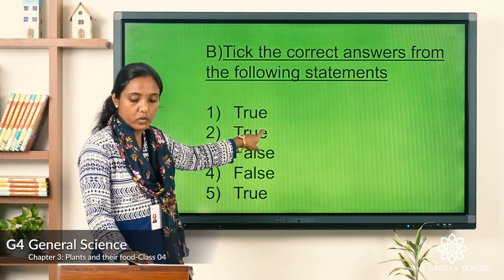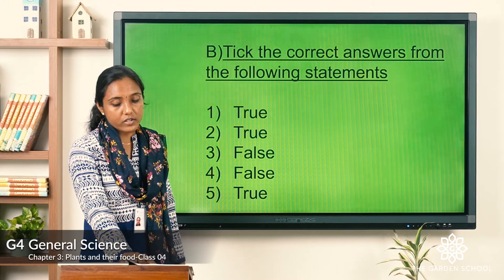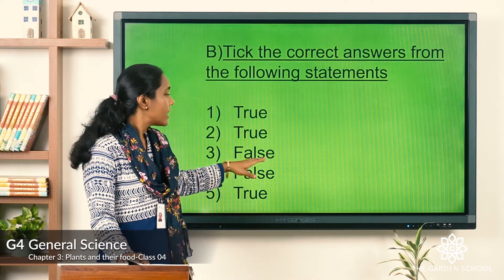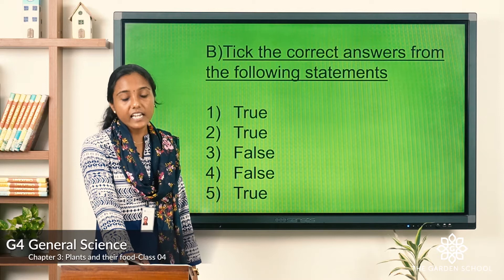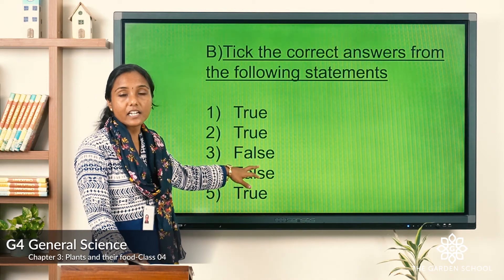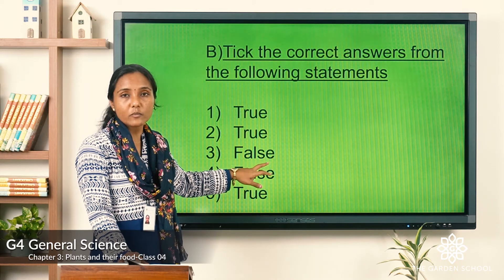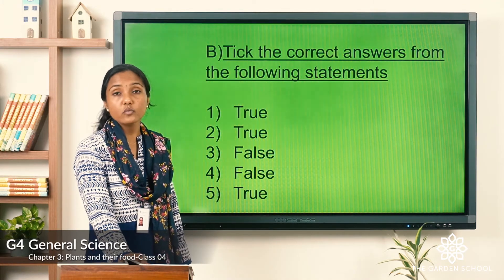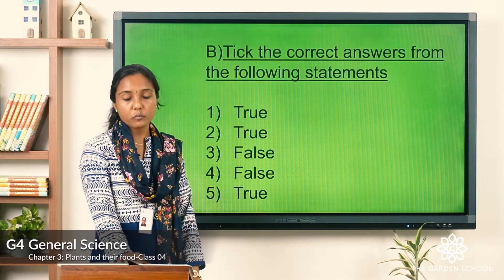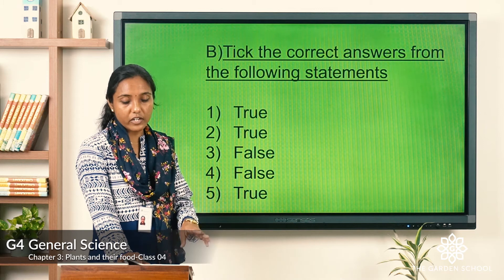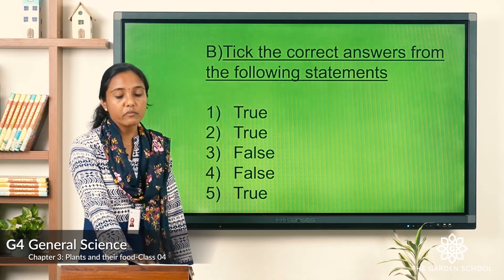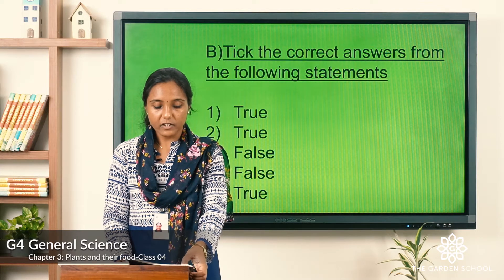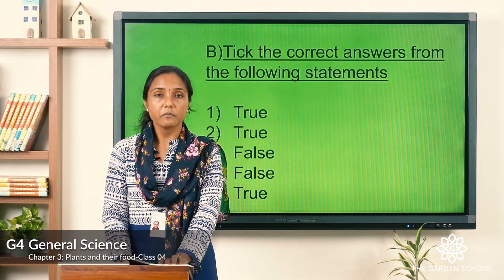Statement three — 'Only plants having green leaves make food' — is false, so do not mark a smiley. Statement four — 'Plants use oxygen to make food' — is also false, leave it. Statement five — 'Most plants make food in their leaves' — is true, mark a smiley. Statements three and four are incorrect.